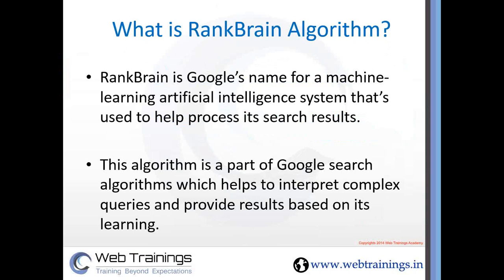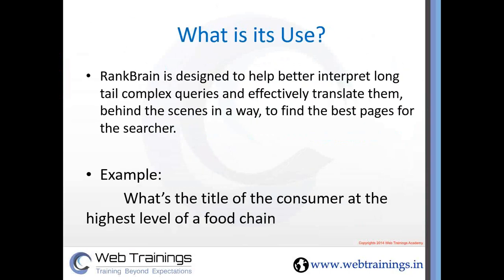RankBrain is a part of the other algorithms already in Google — it's part of Hummingbird and other algorithm updates. What RankBrain specifically does is interpret and understand complex queries which are generally not searched by many users. Whatever results are produced are based on its understanding and learning. It's something like a machine itself trying to understand the data provided by users and then filtering that particular data.